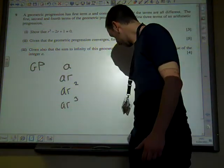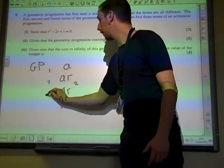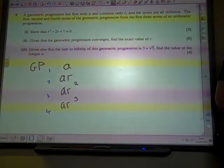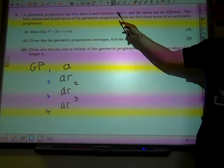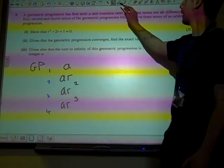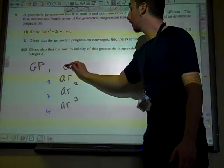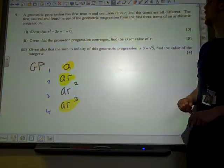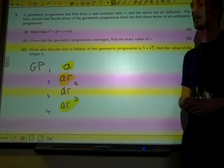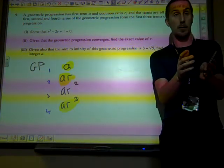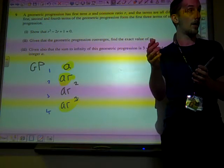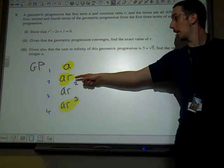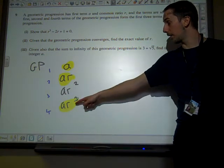They are the first, second, third, and fourth terms. And then we're told that the first, second, and fourth terms form the first three terms of an arithmetic progression. Now, an arithmetic progression has a common difference, doesn't it? So, that means that the difference between those two terms is the same as the difference between that term and that term.